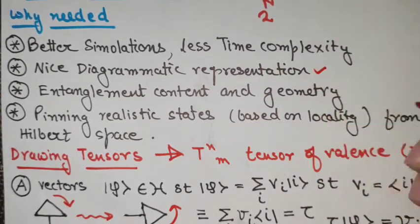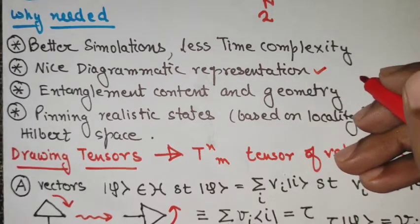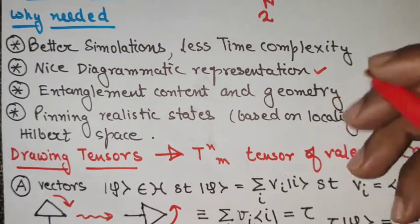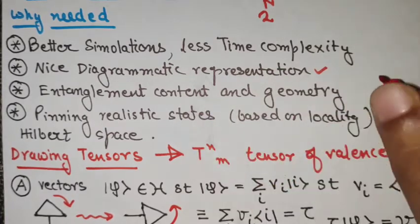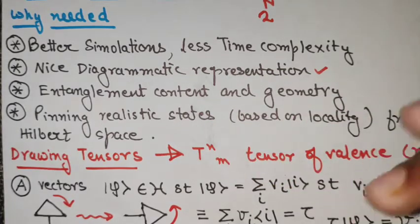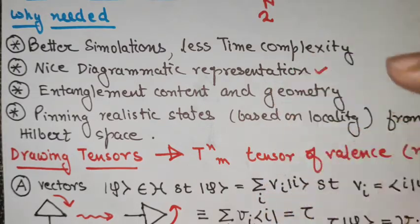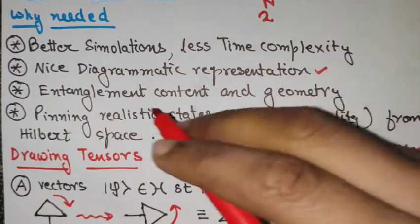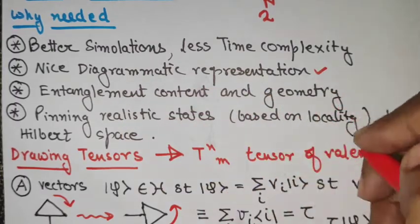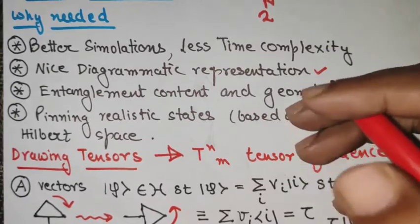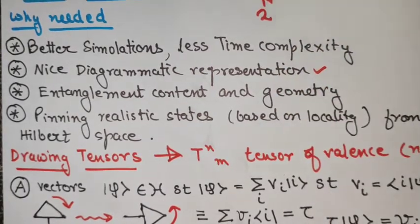Tensor networks provide a nice diagrammatic representation of various circuits and channels, similar to the Feynman diagrams of quantum field theory that help in calculating the scattering cross sections. They also help in storing and understanding the entanglement content, and this entanglement content in quantum gravity is related to the geometry and the curvature of the spacetime, which makes it important.